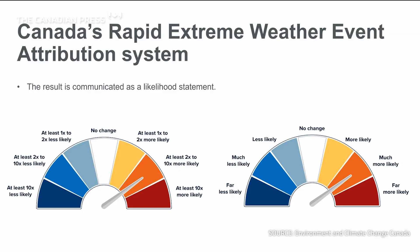The warm colors on the dial correspond to events whose chance of happening increases due to human-caused climate change, such as heat waves or extreme precipitation events. On the other hand, the cool colors correspond to events that are less likely to occur due to human activity, such as cold snaps.